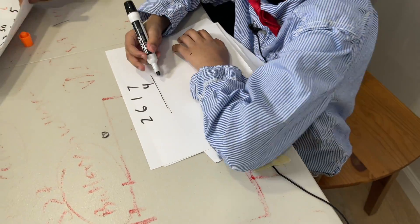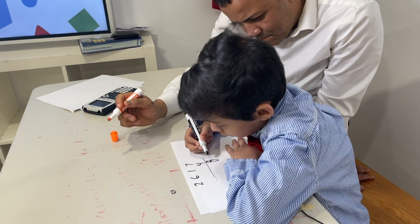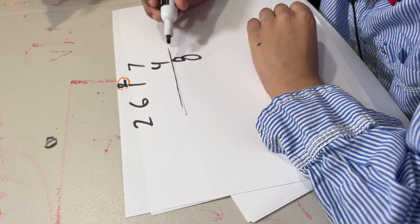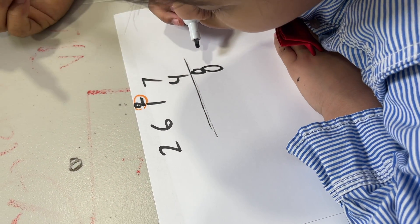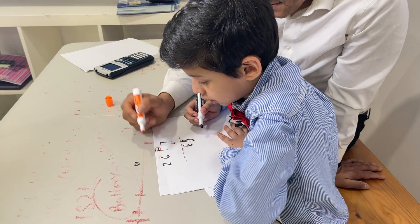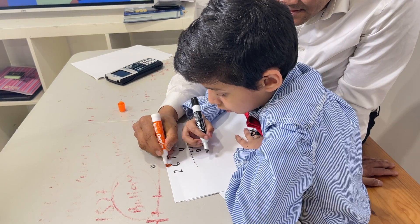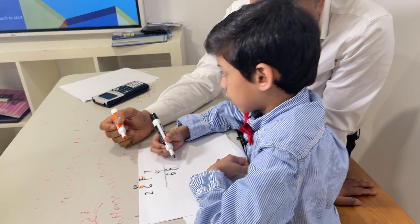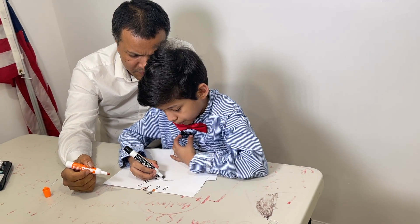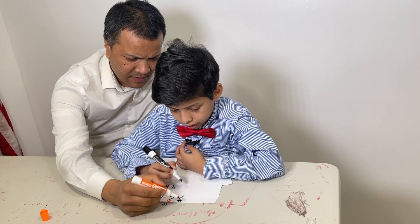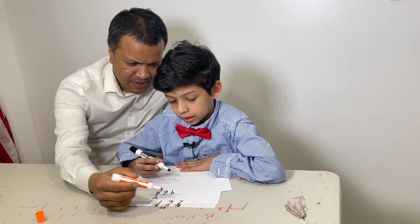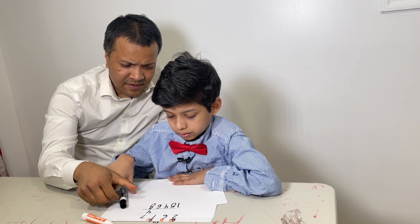So, 7 times 4 is 28 — write 8, carry 2. Then 4 times 1 is 4, plus 2 is 6. Then 4 times 6 is 24 — write 4, carry 2. Then 4 times 2 is 8, plus 2 is 10. So the answer is ten thousand four hundred sixty-eight.